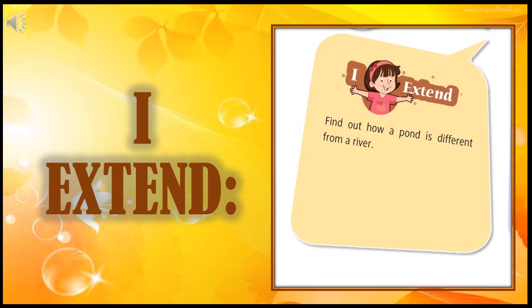In the I Extend section of the course book, you will see a question: how is a pond different from a river? First of all, you need to understand what is a pond. A pond is an area of water that is smaller than a lake. A river is a large natural flow of water that goes across land and into the sea. So you can understand from this definition that there is a major difference between a pond and a river.